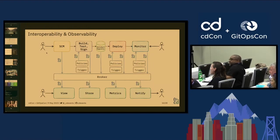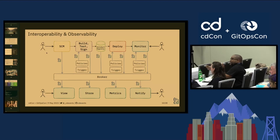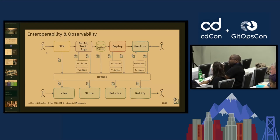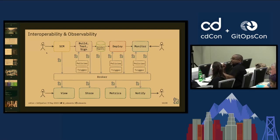The metrics, view, and notification capabilities shown in the architecture diagram are potential projects in themselves. Having something that does end-to-end analysis and shows the pipeline could be a standalone project. This is not just a CD Events question — it's a CDF and Interoperability SIG question, as these are all things that come out of interoperability work.